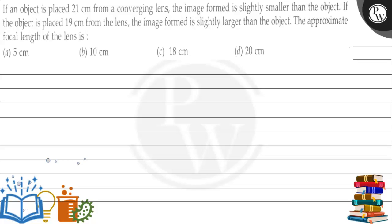Hello bachon, let's read this question. The question says that if an object is placed 21 centimeter from a converging lens, the image formed is slightly smaller than the object. If the object is placed 19 centimeter from the lens, the image formed is slightly larger than the object. The approximate focal length of the lens is — option A: 5 cm, option B: 10 cm, option C: 18 cm, option D: 20 cm.